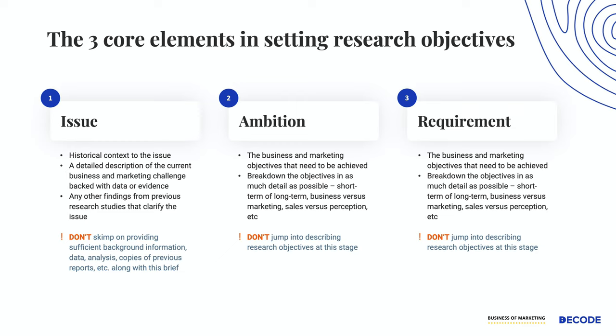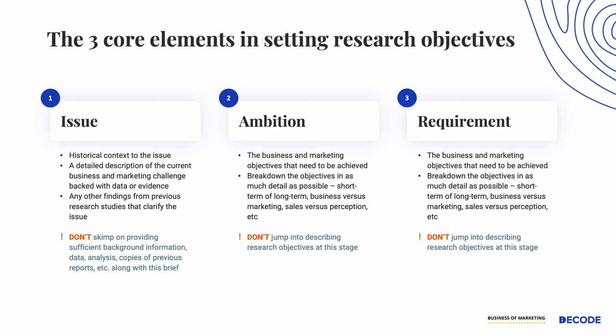One mistake that people often tend to make is they skimp on the amount of information, background data, analysis, or even providing enough copies of reports or other research which might have been done to their research partners. Only when you have completely nailed down the issue in the previous section should you move on to the next section, which is about ambition.